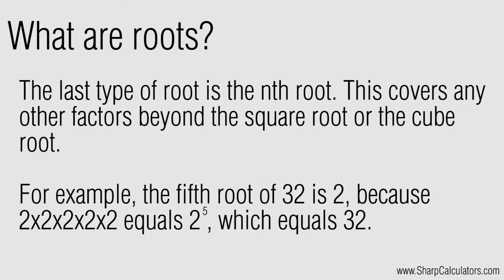The last type of root is the nth root. This covers any roots beyond the square root or the cube root. For example, the fifth root of 32 is 2, because 2 multiplied by itself 5 times equals 32.